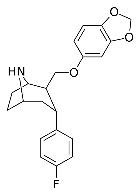RTI-4229-274, R2-beta-3,4-methylenedioxy-phenoxy, methyl, minus 3-alpha, 4-fluorophenyl nortropane is a phenyltropane homologue of paroxetine developed by the group led by F. I. V. Carroll in the 1990s.